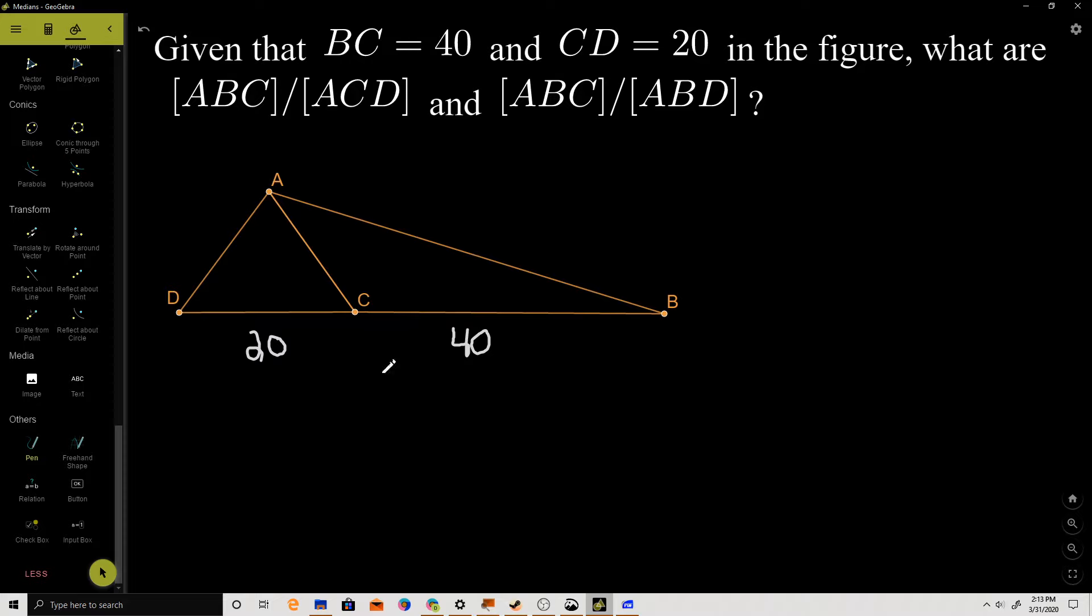Notice it doesn't give us much to go off of, but let's start with the first ratio, the area of ABC over the area of ACD. The formula for the area of a triangle, the most basic one being one-half base times height. So let's determine what our heights and our bases are.